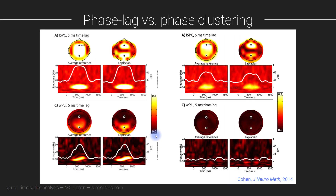Now I'll illustrate a more detailed simulation that really shows both the advantages and limitations of phase lag and phase clustering. I generated data inside brain dipoles — simulating dipole-level rather than electrode-level activity. I simulated two dipoles: one in prefrontal cortex and one in parietal cortex, then projected their activity out onto EEG electrodes and performed all analyses at the electrode level.